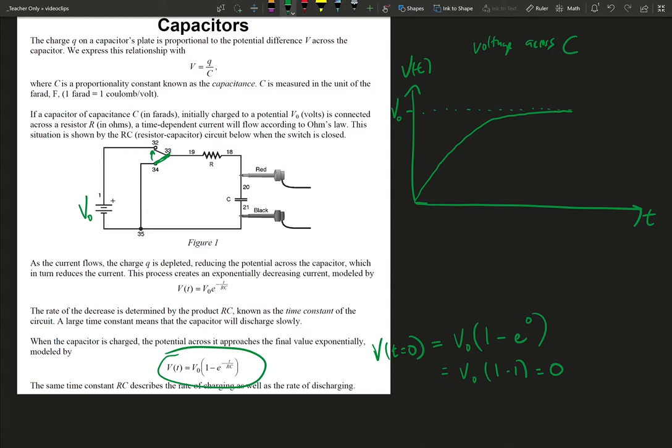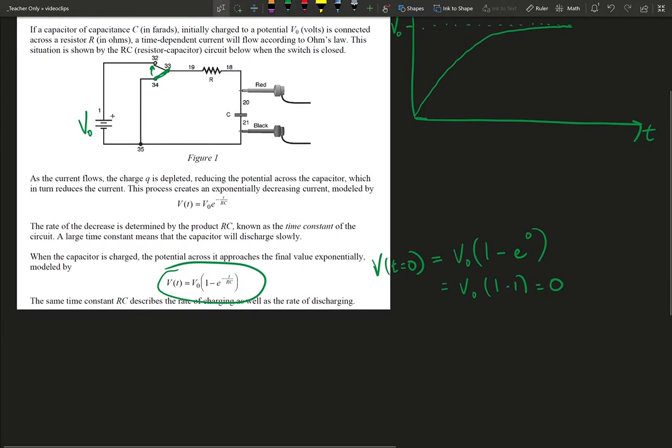We can look at this another way too, the other side of this behavior, the boundary conditions, if you will. So after a really long time period t, after we've let that switch close and we just monitor the voltage, what will the voltage across the capacitor be according to the equation?